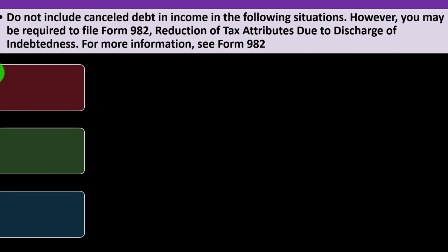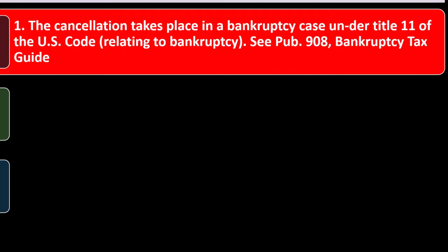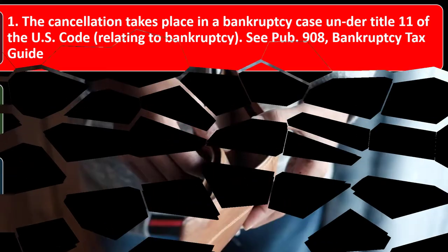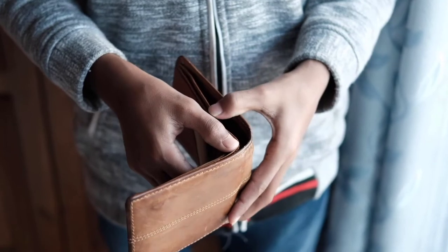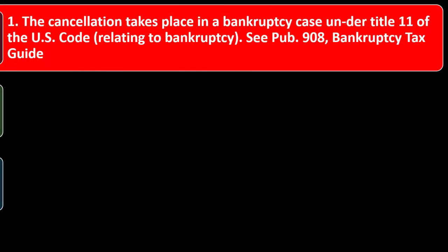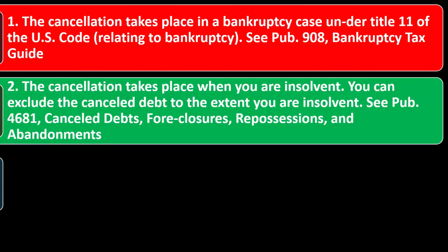Tax exclusions — do not include canceled debt in income in the following situations. However, you may be required to file Form 982, Reduction of Tax Attributes Due to Discharge of Indebtedness. Number one: the cancellation takes place in a bankruptcy case under Title 11 of the US Code. Part of the benefits of bankruptcy is to settle some of these issues, so you operate under the rules of the bankruptcy code. See Publication 908, Bankruptcy Tax Guide.